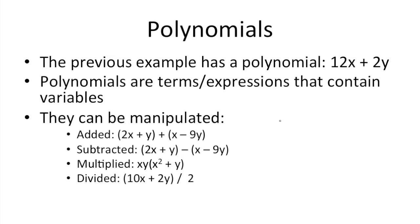So the last example has a polynomial, 12x plus 2y. All polynomials are terms and expressions that contain variables. They can be manipulated in several ways. For instance, they can be added together here, 2x plus y plus x minus 9y. All you need to do is add 2x plus x, which gets you 3x. Y minus 9y gets you minus 8y. So this simplifies to 3x minus 8y.